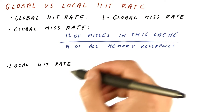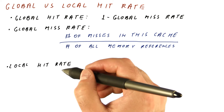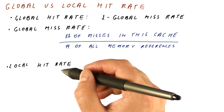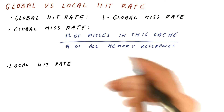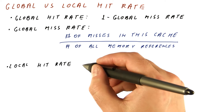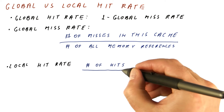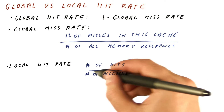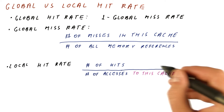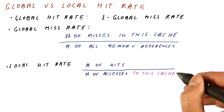In contrast, the local hit rate and the local miss rate can be defined in terms of normal cache behavior local to this cache. The local hit rate, for example, is the number of hits divided by the number of accesses to this cache.